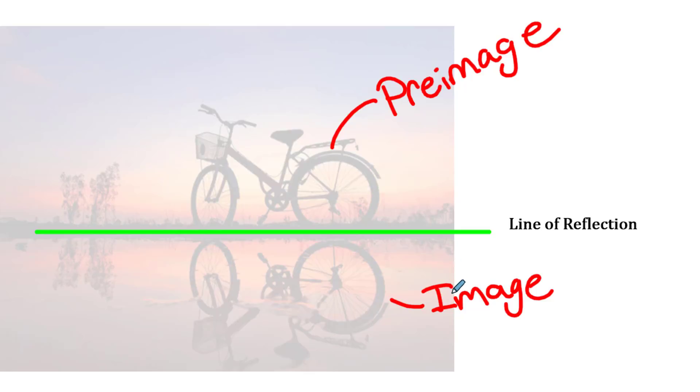So you got the pre-image, and then you got the image, and then what the bike is reflected over. Check out this green line right here. That's called the line of reflection. That's pretty much what a reflection is.